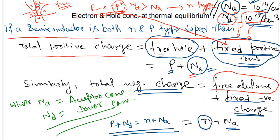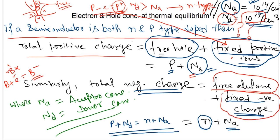Similarly, the total negative charge consists of free electrons from donors, plus fixed negative ions from acceptors. Boron has valency three, and to complete the covalent bond one extra electron is borrowed, making B a fixed negative ion B-. The concentration of these fixed negative ions equals Na. So from charge neutrality: p + Nd = n + Na. The total semiconductor is electrically neutral, so total positive charge equals total negative charge.